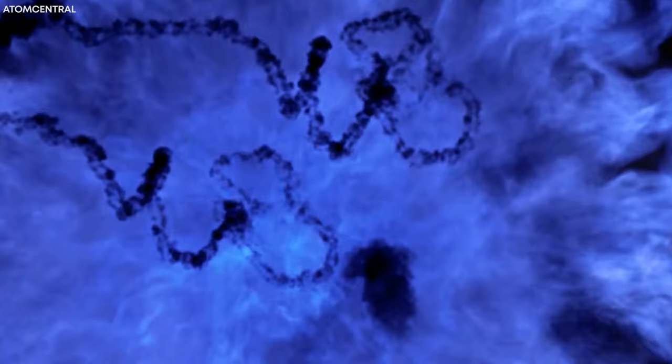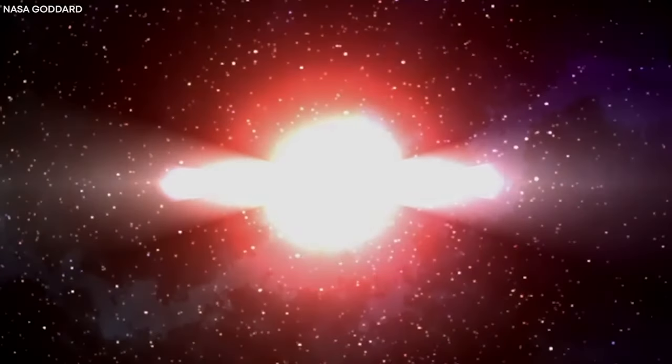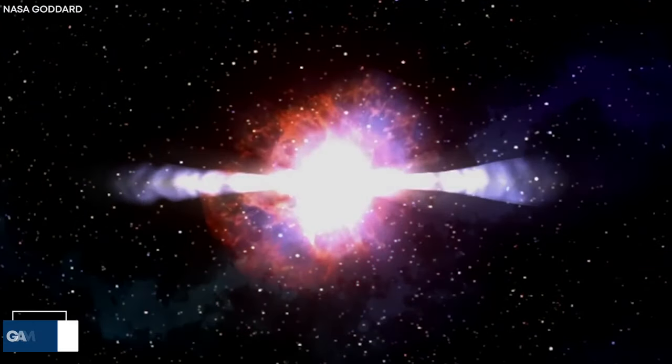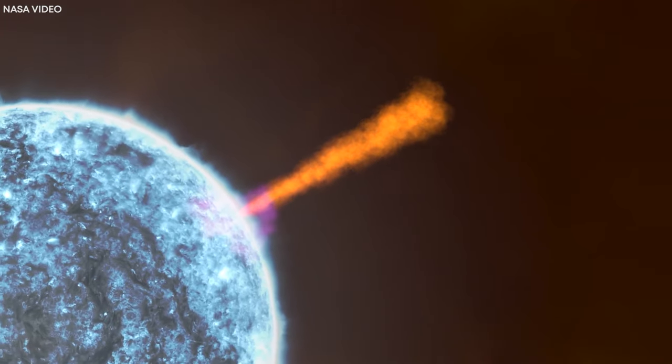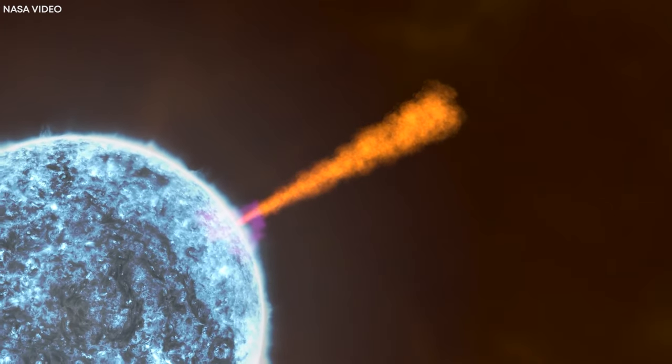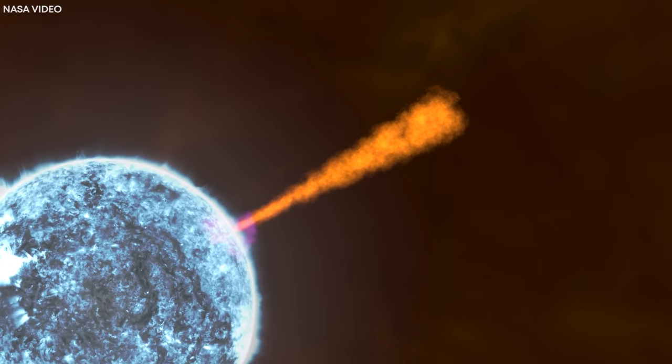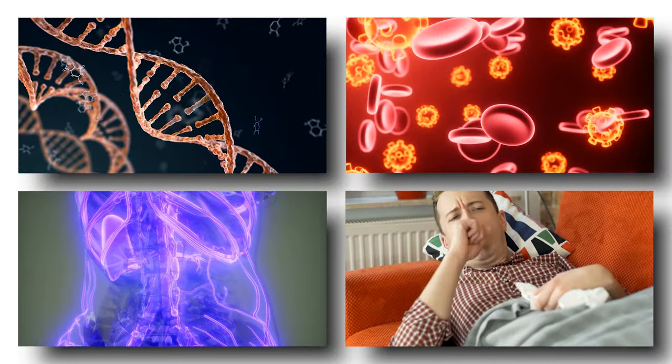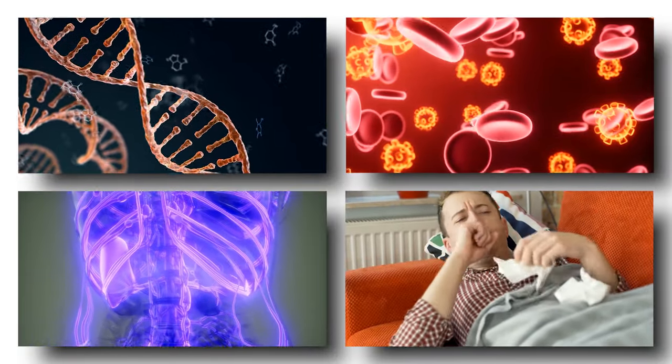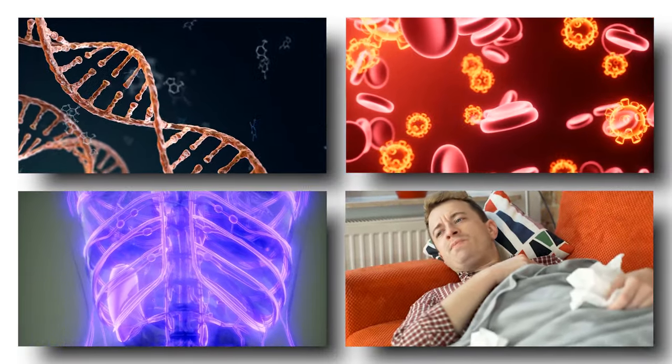So, when this antimatter meets regular matter, a massive explosion will happen. The explosion would release very powerful radiation called gamma rays. These gamma rays can go through almost anything and harm living things and materials. They can cause genetic mutations, damaged cells and tissues, and have long-term effects on our health.